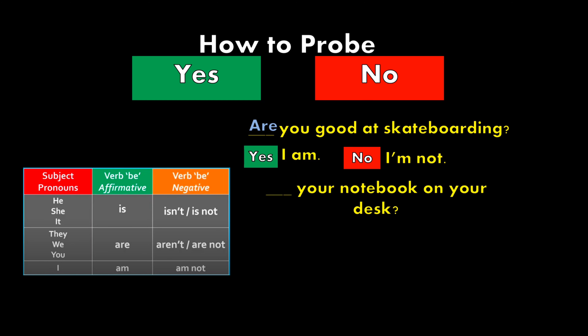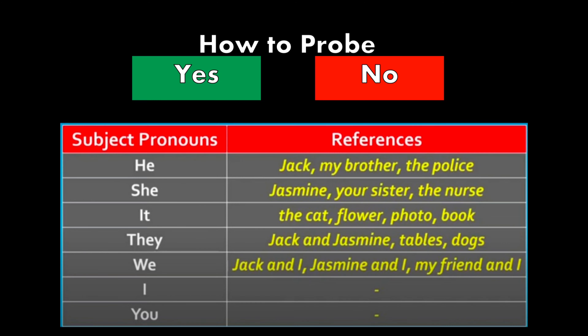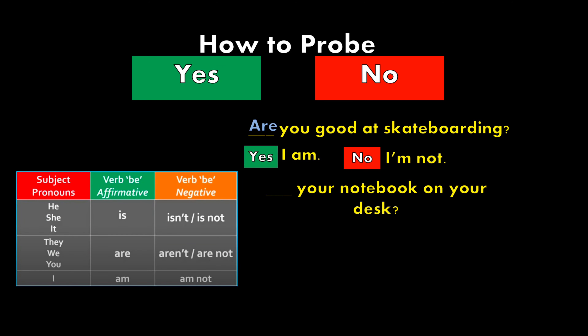Question number two: 'Your laptop on your desk?' If you refer to the previous chart, and you want to use a subject pronoun to refer to the laptop, the most suitable pronoun is 'it'. So if the subject pronoun is 'it', the verb be affirmative form we should use is 'is'. So: Is your laptop on your desk? If your laptop is on your desk, then yes, it is. Otherwise, no, it isn't.